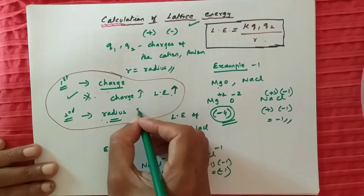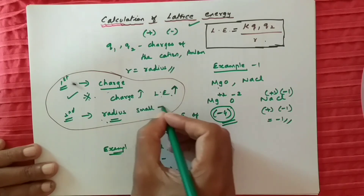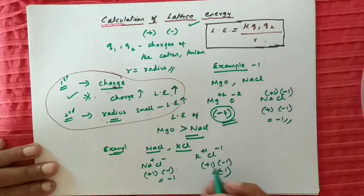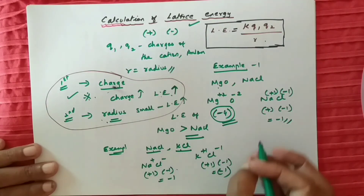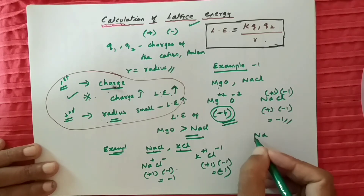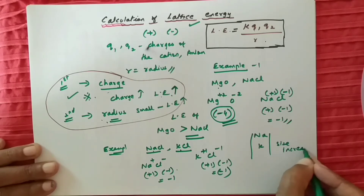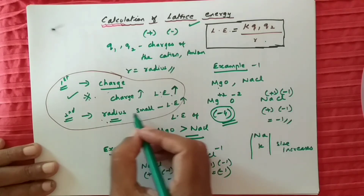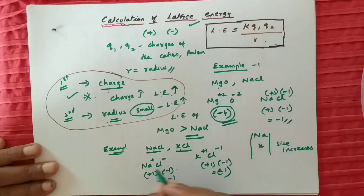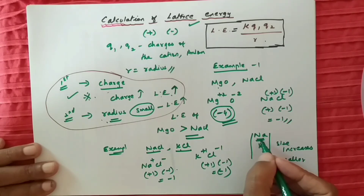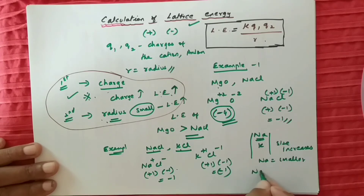When the radius is smaller, lattice energy will be more, because it is inversely proportional. Out of NaCl and KCl, in the periodic table Na is above K. As we move down the group, atomic size or ionic size increases. So sodium has a smaller ionic size. Smaller size means more lattice energy. Therefore, lattice energy of NaCl is greater than KCl.